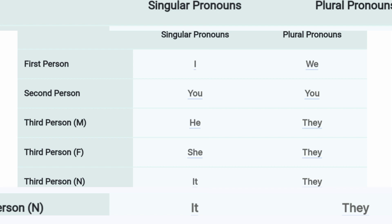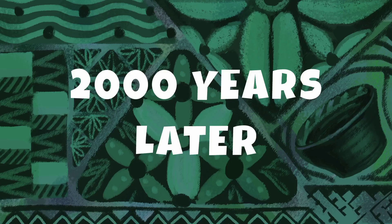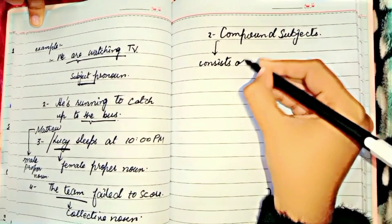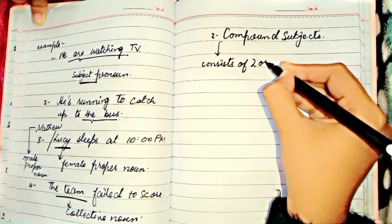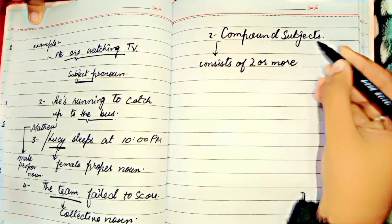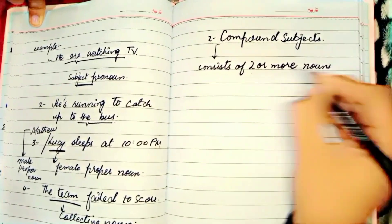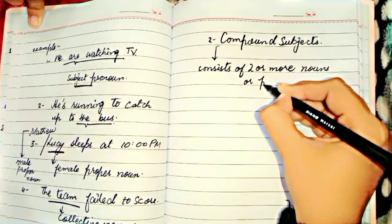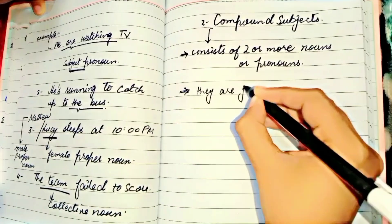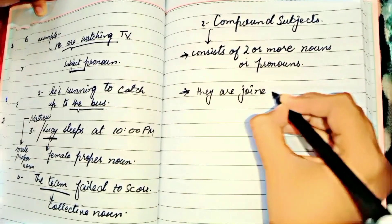Here is a flowchart of first person, second person, third person pronouns. Number two: we have compound subject. As the name suggests, a compound subject consists of two or more nouns and pronouns that are joined by a coordinating conjunction.